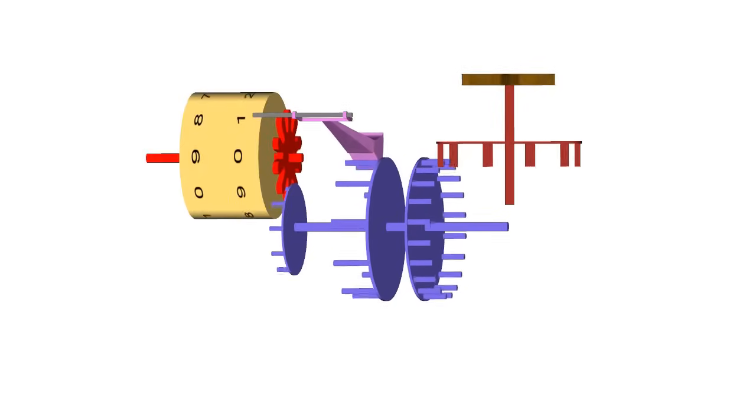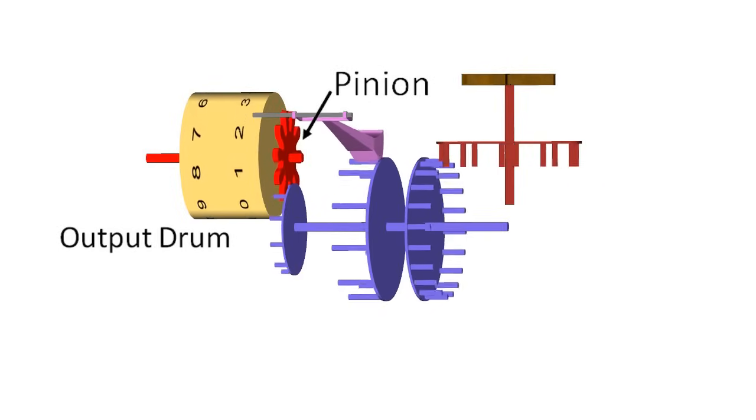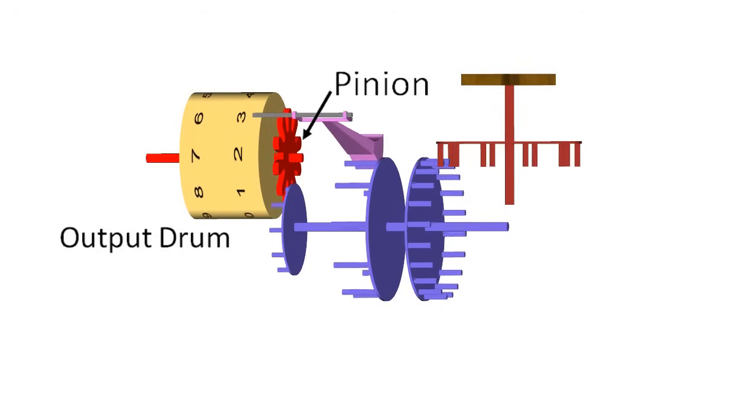The value stored in the accumulator is transferred by a pinion wheel to an output drum, which displays the value through the output window.